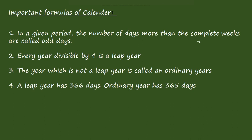If you consider 7 — in a week we have 7 days: Sunday, Monday, Tuesday, Wednesday, Thursday, Friday, Saturday. If you consider 7 days plus one day, then that one day is an odd day. Two days is also an odd day. Six days is also an odd day. But if you consider seven days, then it is not an odd day.